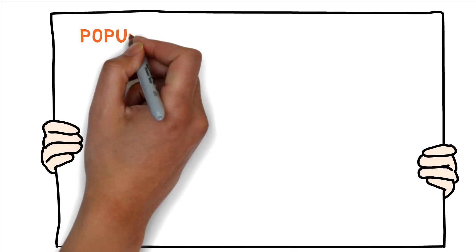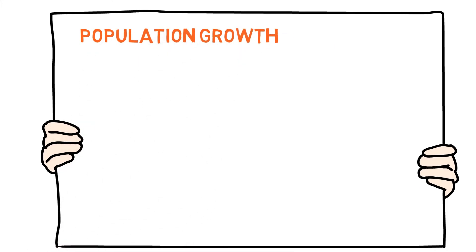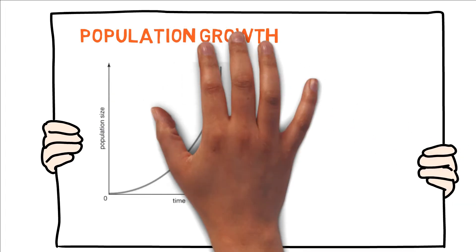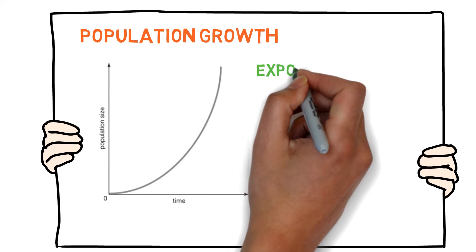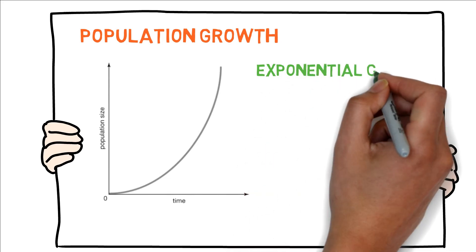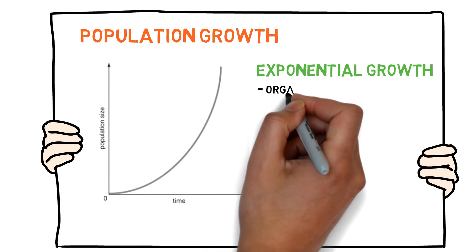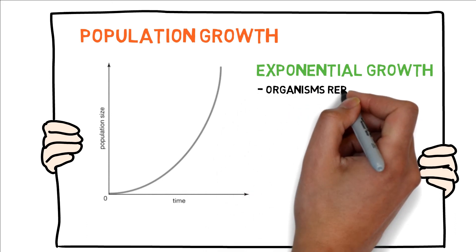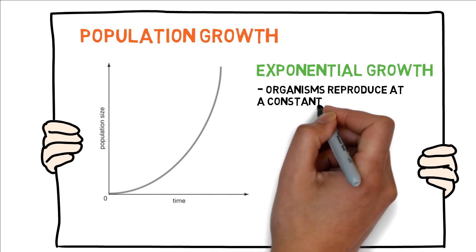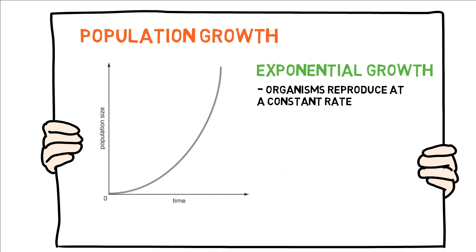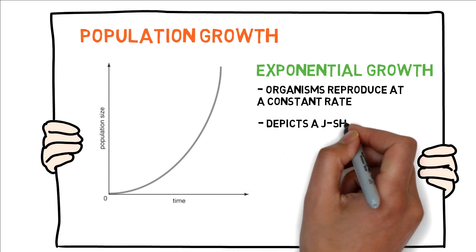We have two models for population growth. The first model is an exponential model. In this model, organisms reproduce at a constant rate. The graph is an exponential graph, which is a J-shaped graph.